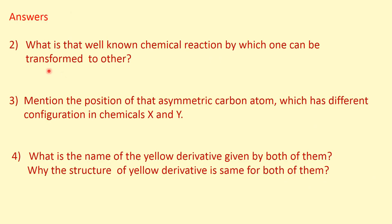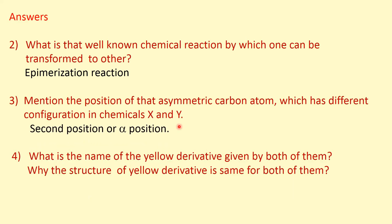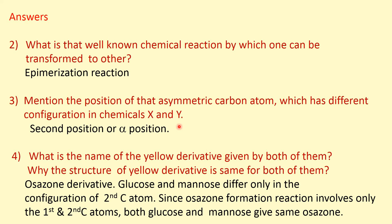Answers to the remaining questions: Question 2 — what is the well-known chemical reaction by which one can be transformed to the other? The answer is epimerization reaction. Question 3 — the position of that asymmetric carbon atom which has different configuration in X and Y is the second position, or alpha position. Question 4 — the name of the yellow derivative is osazone. Glucose and mannose differ only in the configuration of the second carbon atom, and since osazone formation involves only the first and second carbon atoms, both give the same osazone.